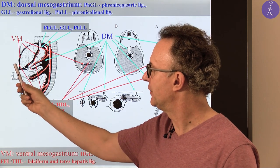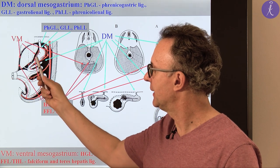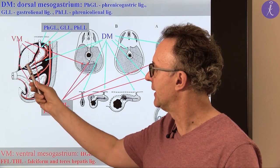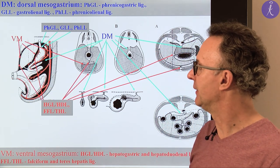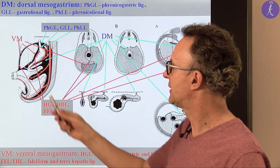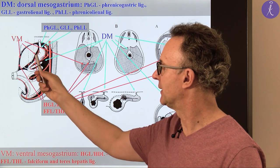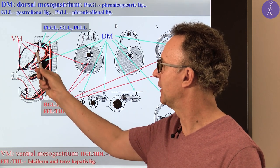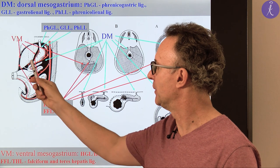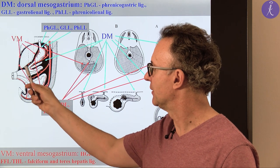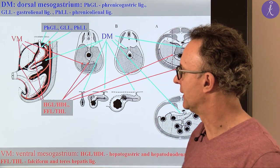The anterior part is the falciform ligament. Behind, this is the lesser omentum, having two parts. The major, longer part is related to the stomach — this is the hepatogastric ligament — and the distal part is the hepatoduodenal ligament. This shows the distal end of the ventral mesogastrium, which doesn't extend down to the caudal part of the embryo, in contrast to the dorsal mesogastrium, which descends until the rectum.